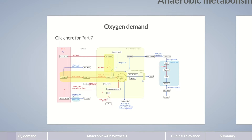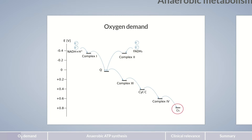In the last episode of this course on energy metabolism, we saw that just the last step of the electron transport chain depends on oxygen. Oxygen serves as the final electron acceptor for the reducing equivalents NADH and H+, and FADH2. Through electron transfer, oxygen is reduced to water at complex IV in the electron transport chain.